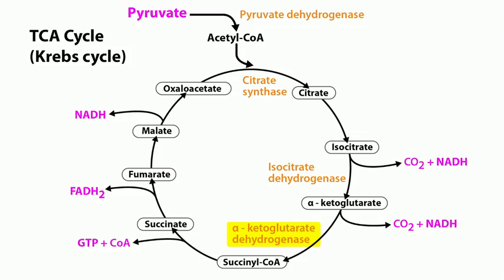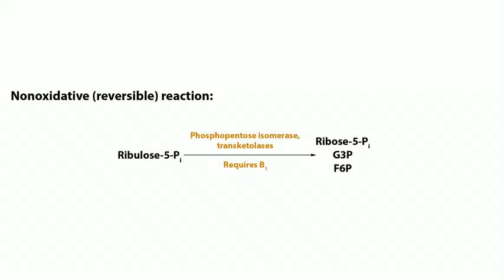You can use the mnemonic 'Tender Loving Care for Nobody' for the required cofactors for pyruvate dehydrogenase and alpha-ketoglutarate dehydrogenase — thiamine is the 'tender' part of that mnemonic. Ribose-5-phosphate to glyceraldehyde-3-phosphate is catalyzed by transketolase in the pentose phosphate pathway, and that reaction also requires thiamine.